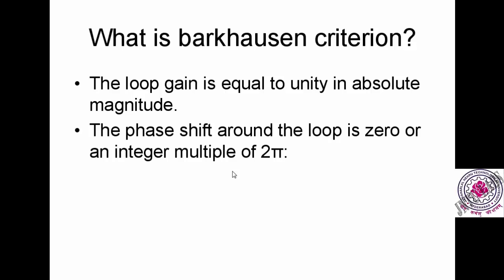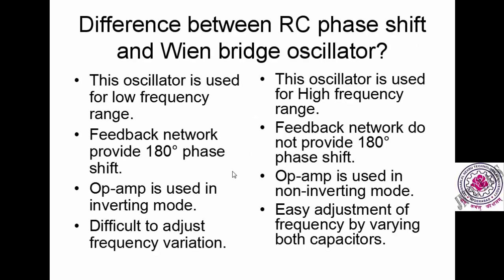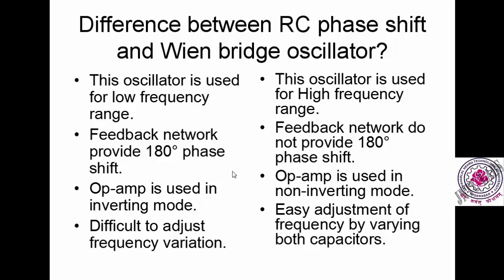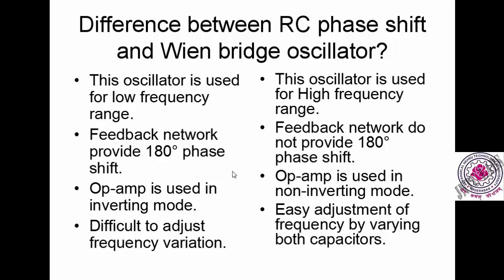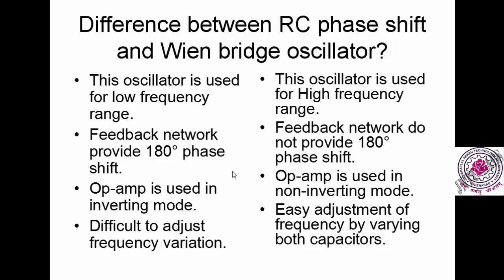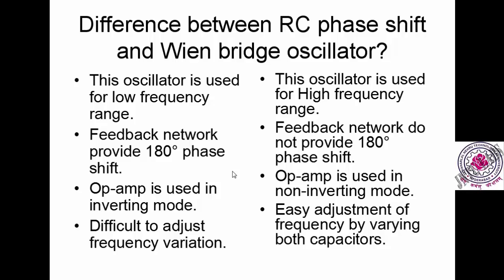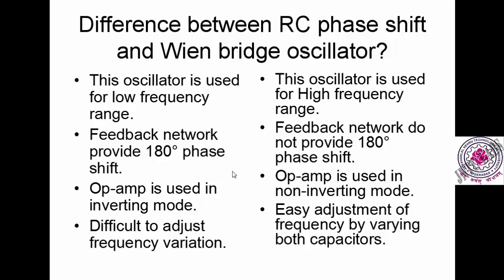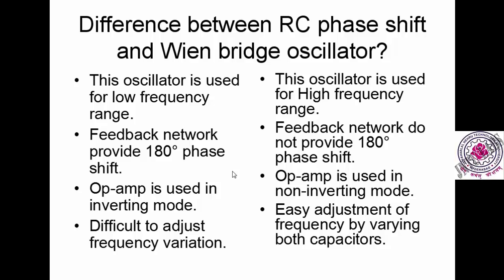The next question is: what is the difference between the RC phase shift oscillator and the Wien bridge oscillator? In academics we learn these two oscillators along with others like the Colpitts, LC tank circuits, etc. The RC phase shift oscillator is used for low frequencies, while the Wien bridge oscillator is used for high frequencies. In the RC phase shift oscillator, the feedback network provides a 180-degree phase shift.